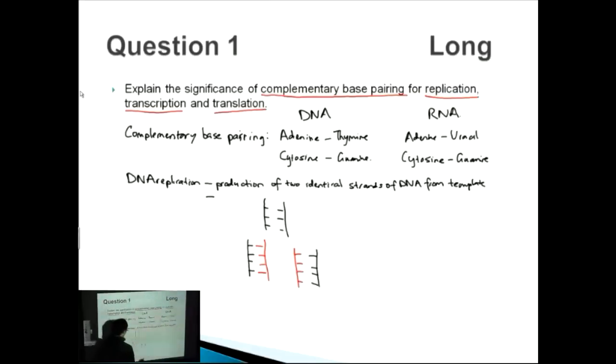What this means is that semi-conservative replication means that for this daughter DNA, you have one strand which is originally from the parent and the other strand is brand new. That's what semi-conservative replication means, and if you write that down you get an extra mark.